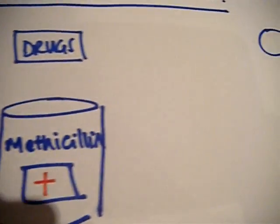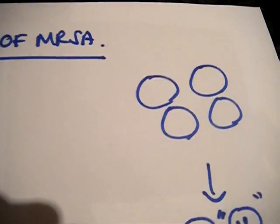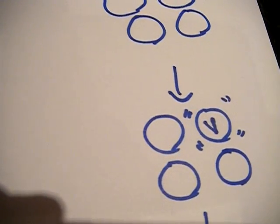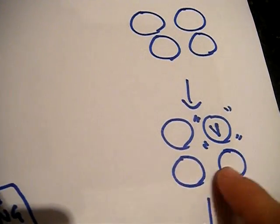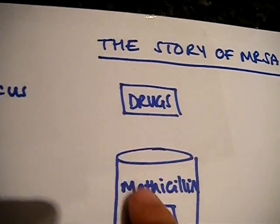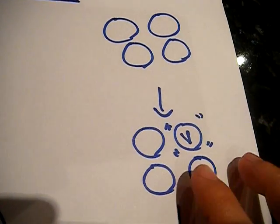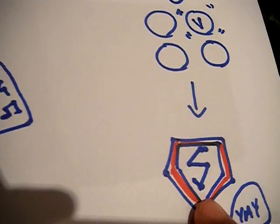All because from the group that were the same, the bacterial group that were the same, one has become a little bit different, and it survives. So all these ones would get killed. In this group of four, loads would get killed if you just gave them normal drugs and methicillin, but this one would stay and multiply and go mad. So this is a superbug.